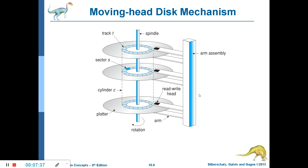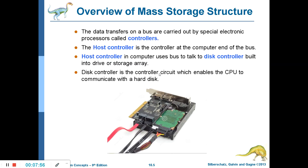This is the moving head disk mechanism. There is a motor attached to the spindle. Whenever the motor rotates, the spindle rotates with it, and when the spindle rotates, all the platters rotate along with the spindle.